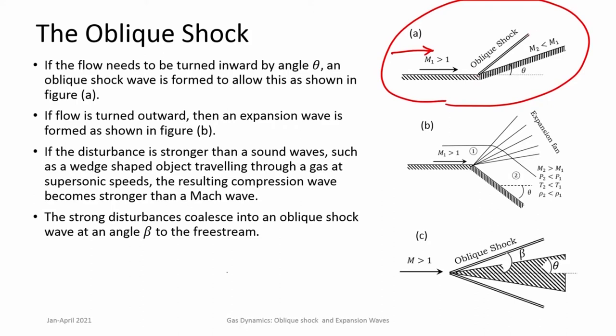The manner in which an oblique shock is formed is in principle the same as discussed for a normal shock. You can have several compression waves, and all of these compression waves will ultimately join together to form the oblique shock. The oblique shock is at an angle to the upstream flow, and after the oblique shock the flow gets turned towards itself and parallel to the wall.